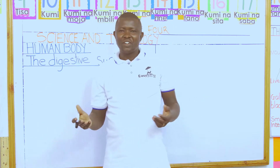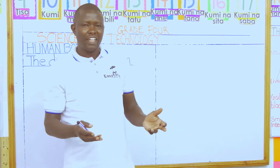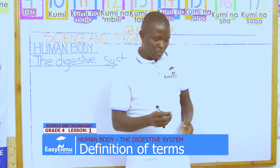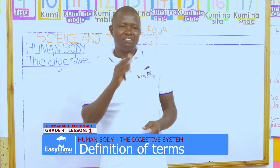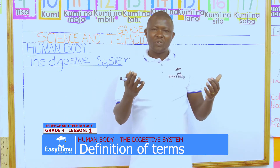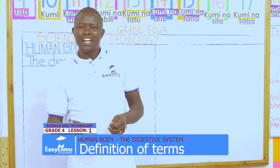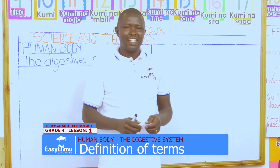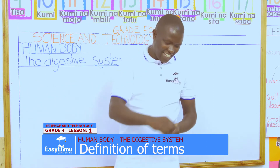In our today's lesson on the digestive system, I want us to pair ourselves into two and observe your partner. Check which part does he or she put food when eating? What have you observed? John has said his partner puts food in the mouth, and that is correct.